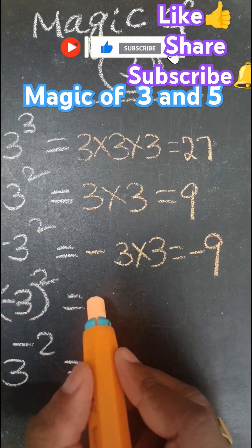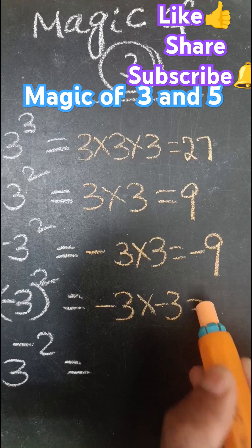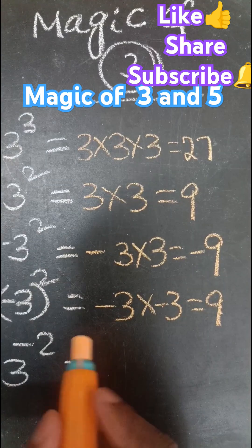Next, minus 3 whole square. Minus 3 into minus 3. Minus into minus plus, 3, 3 is 9, plus 9.